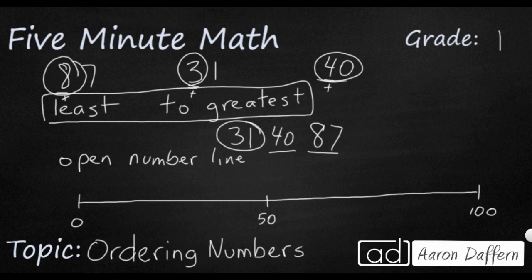Well, let's start with 31 first. So 31 is between zero and 50, and it's just probably a little bit more than halfway. So I'm just going to put 31. I don't know exactly where it is, but I'm going to guess.